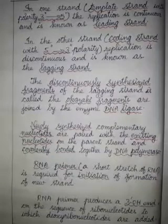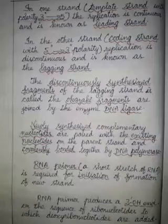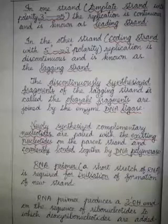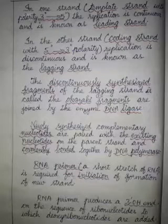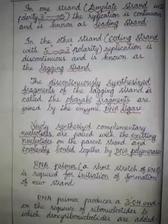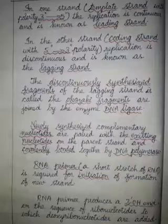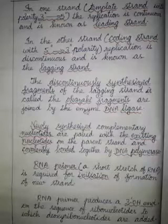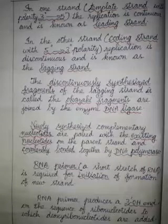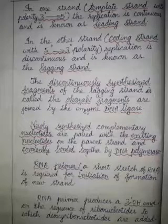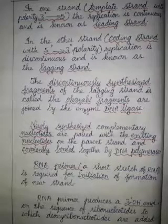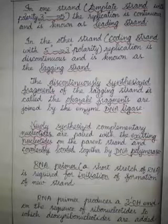With the help of the DNA helicase, the two strands are unwound. One strand will have the polarity of 3' to 5' and the other strand will have the polarity of 5' to 3'. One strand will act as the template with the polarity of 3' to 5'. The replication will be continuous in this strand and this strand is called the leading strand.